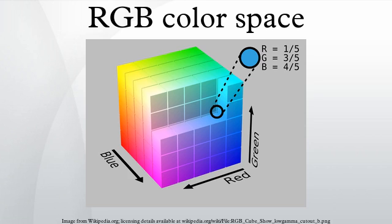An RGB color space is any additive color space based on the RGB color model. A particular RGB color space is defined by the three chromaticities of the red, green, and blue additive primaries, and can produce any chromaticity that is the triangle defined by those primary colors.